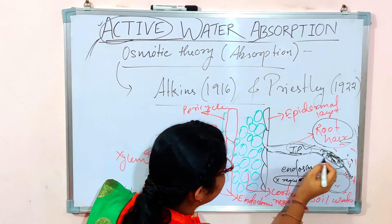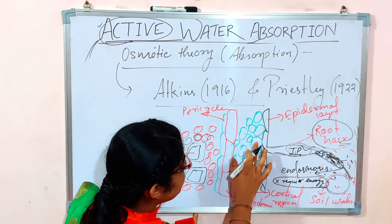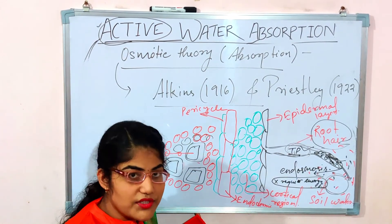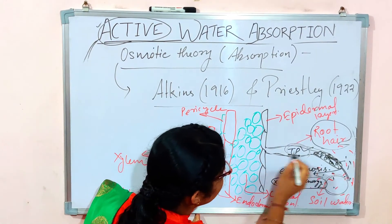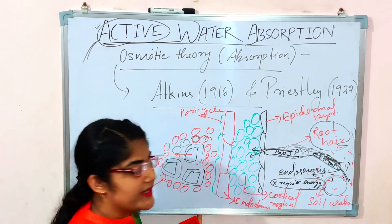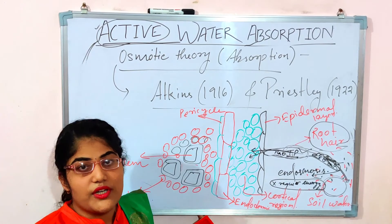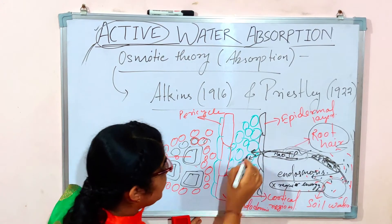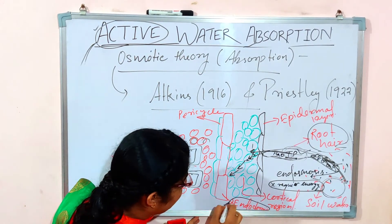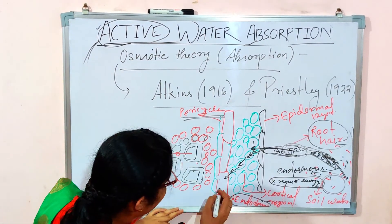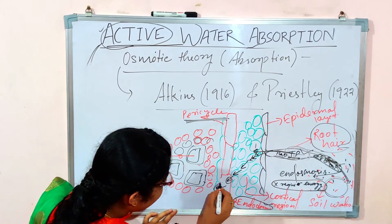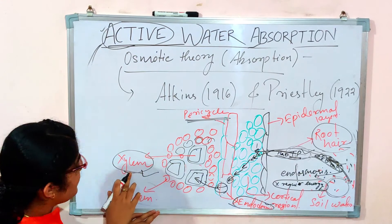After water enters the root hair cells, the adjacent cortical cells have a higher osmotic pressure, suction pressure, and DPD. So the water from the root hair enters the cortical cells by osmotic diffusion. It then moves from cortical cell 1 to cortical cell 2, then to cell 3, and eventually reaches the endodermis. By the same mechanism, water from the endodermis enters the pericycle region, and from the pericycle it finally moves into the xylem.